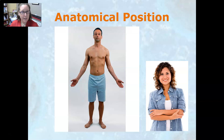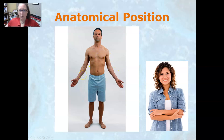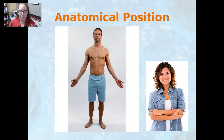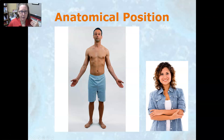Let's start with the anatomical position. This gentleman right here reflects the anatomical position — he is standing erect with arms on the side of the body, a little bit away from the body, but most importantly the palms are facing forward with the thumbs up. Most of the time it's pretty easy to figure out what's the front and back of the body — his face and chest are anterior, no problem.